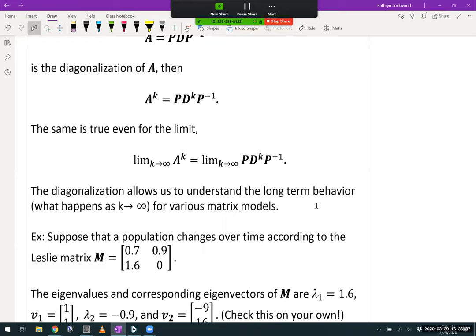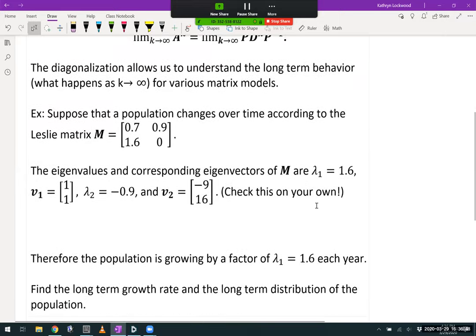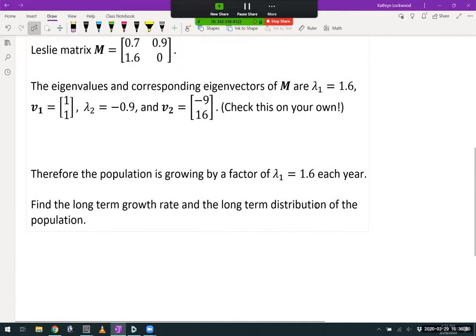Alright, so this diagonalization is going to let us understand the long-term behavior for various matrix models today, looking at populations that change according to a Leslie matrix. Let's take our Leslie matrix to be 0.7, 0.9, 1.6, and 0.